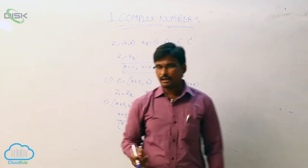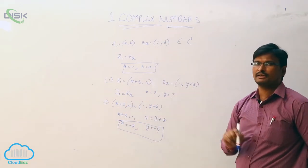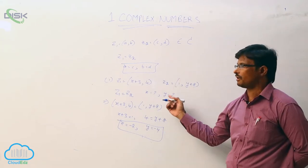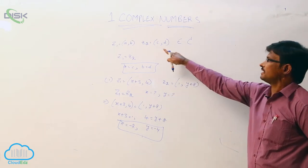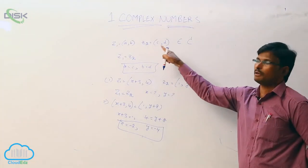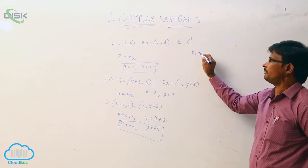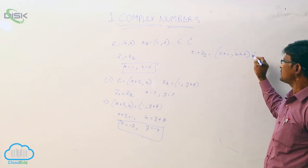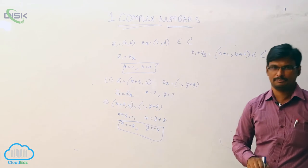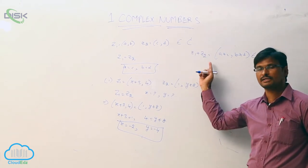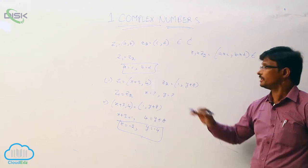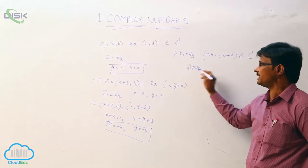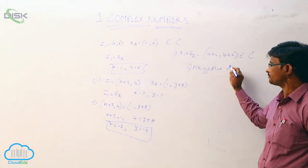Now observe that the addition of two complex numbers is again a complex number. If z1 = (a, b) and z2 = (c, d), then z1 + z2 = (a+c, b+d), which is also a complex number. This is the first property. The second property is the negative of a complex number.